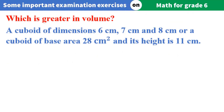Which is greater in volume? A cuboid of dimensions 6 centimeters, 7 centimeters and 8 centimeters, or a cuboid of base area 28 centimeters squared and its height is 11 centimeters.